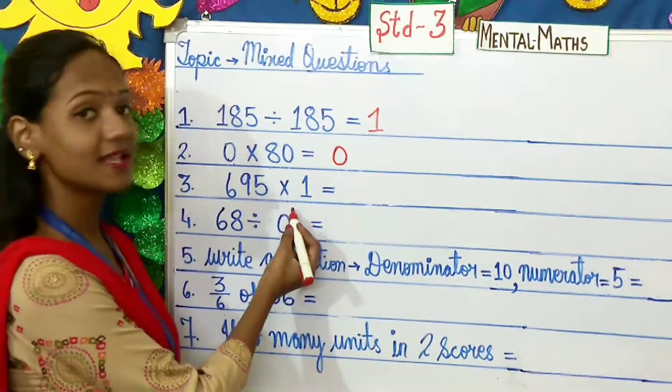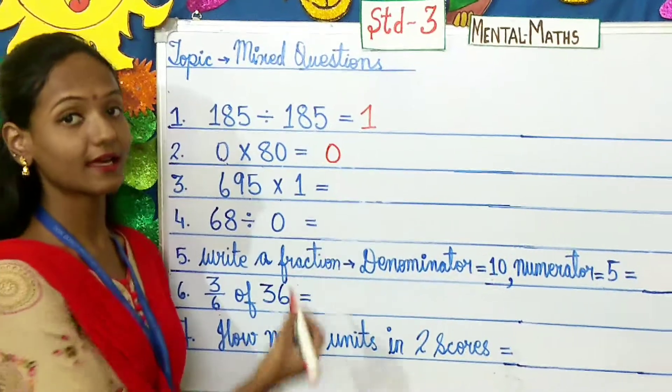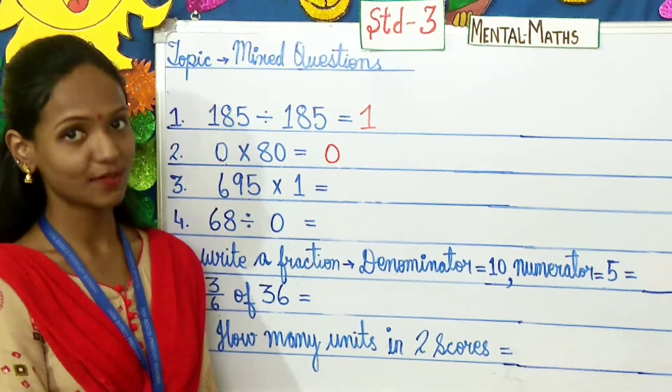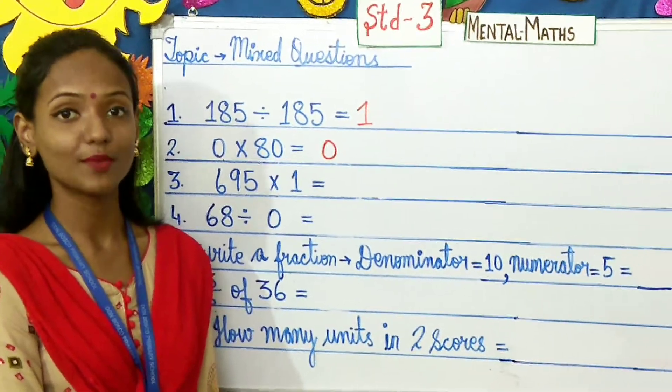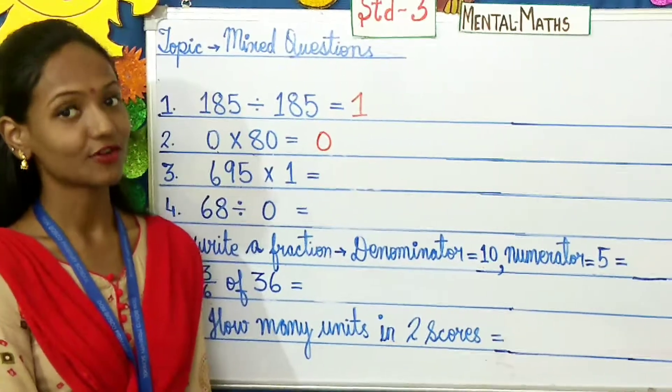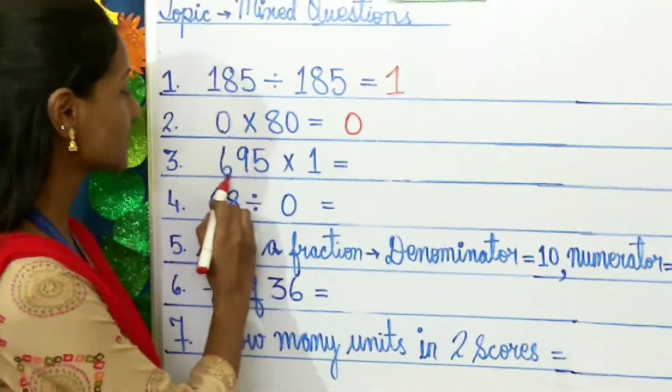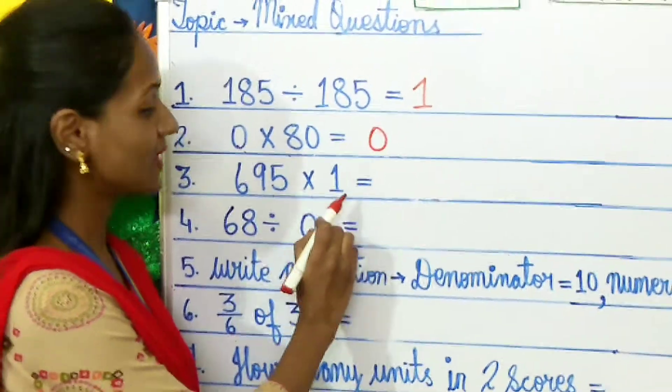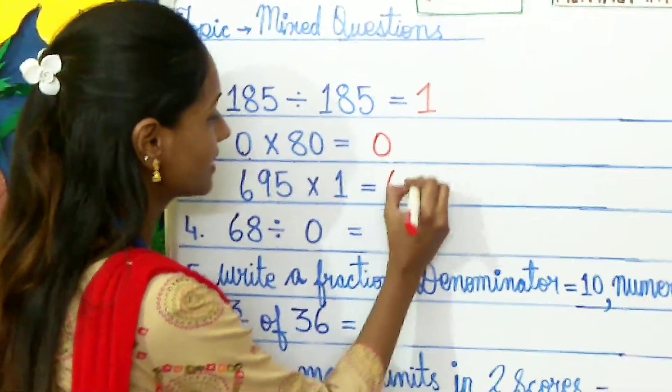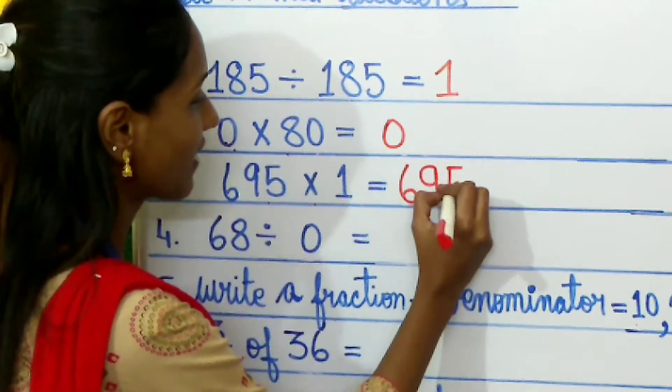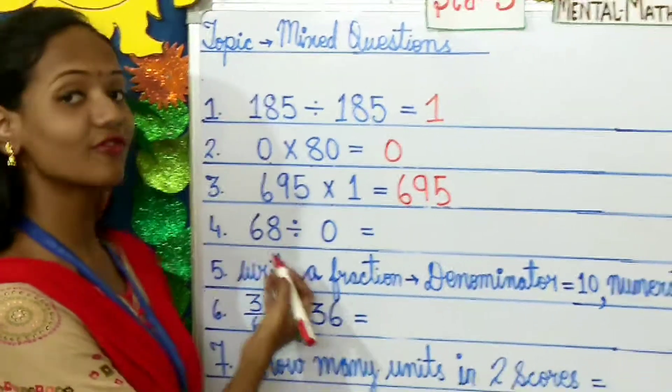695 multiplied by 1. Again, in properties of multiplication, any number multiplied by 1, the answer will be the number itself. So, here the number is 695 multiplied by 1. Your answer will be 695. Moving on to the fourth question.